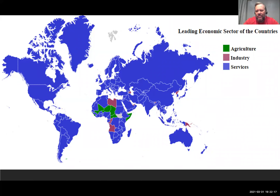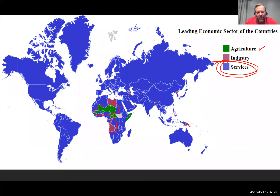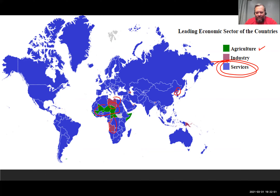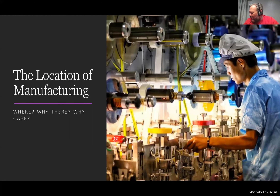Looking at a world map of leading economic sectors by country, services dominate for most nations. In poorer countries, agriculture makes up a higher percentage. A few countries — some in Africa, North Korea, and Papua New Guinea — show industry or agriculture as the leading sector, but services clearly dominate globally.